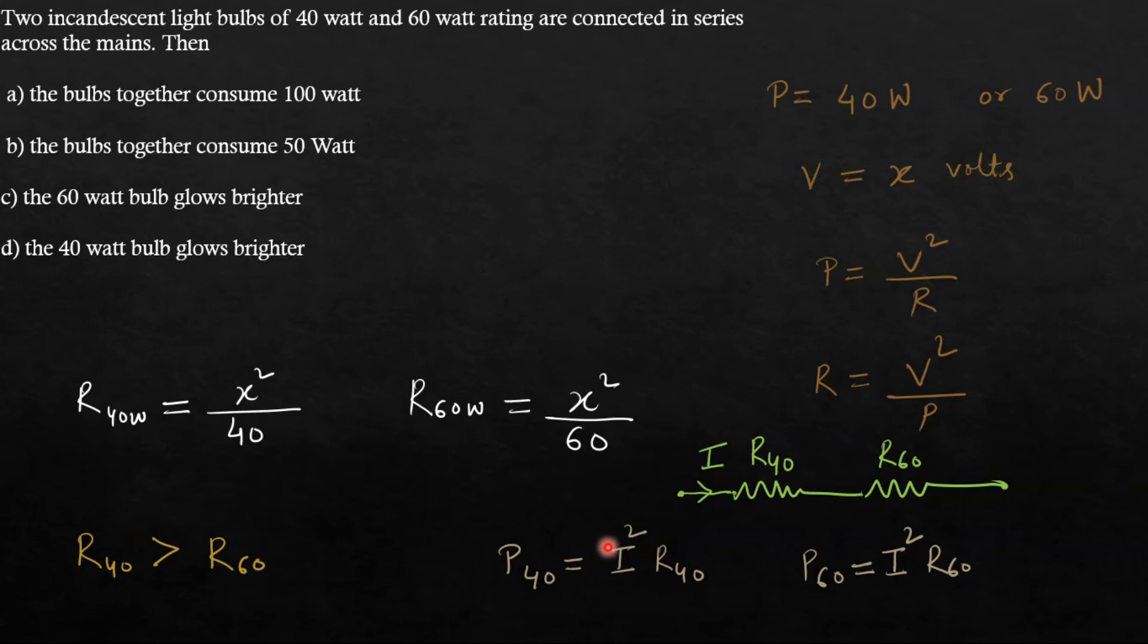From here we can conclude that 40 Watt bulb will glow brighter, because it is consuming more power as compared to 60 Watt bulb in this connection. So our answer will be D.